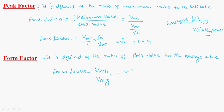And Vaverage value is 0.637 Vm. Here Vm and Vm will get cancelled. 0.707 by 0.637 is 1.11.